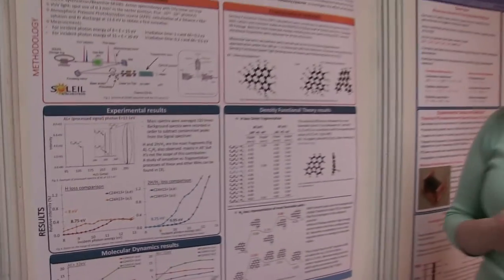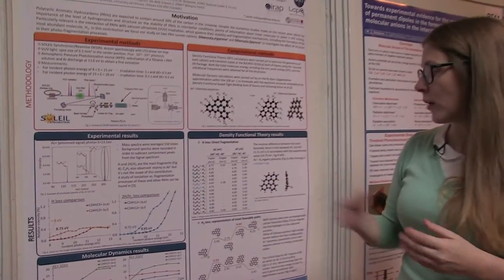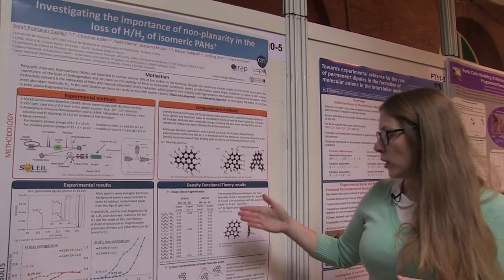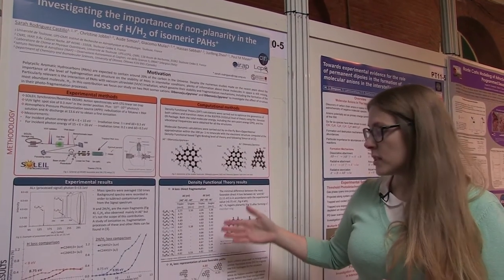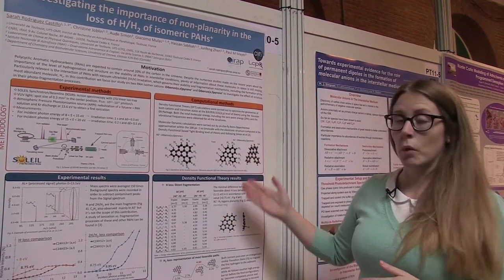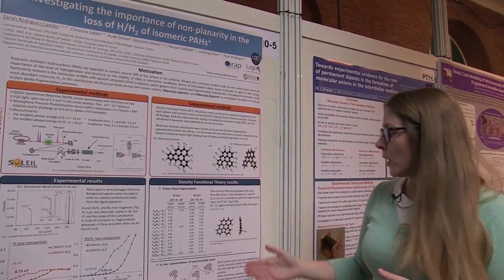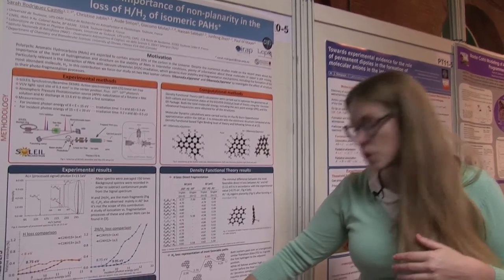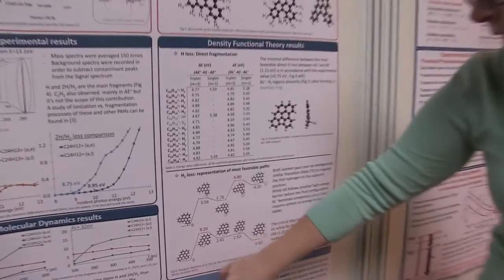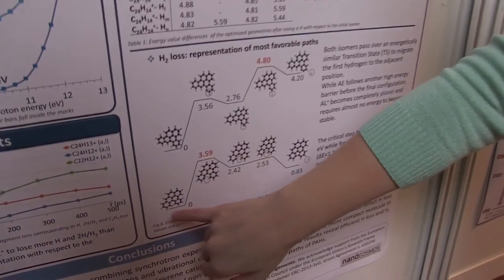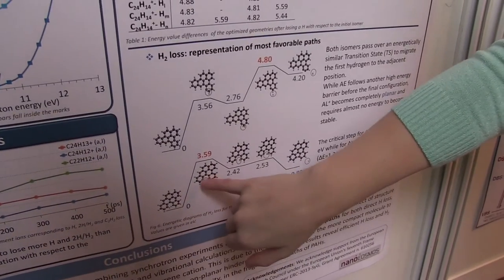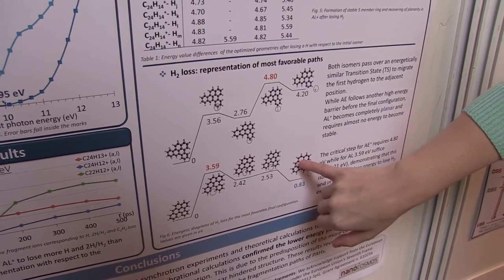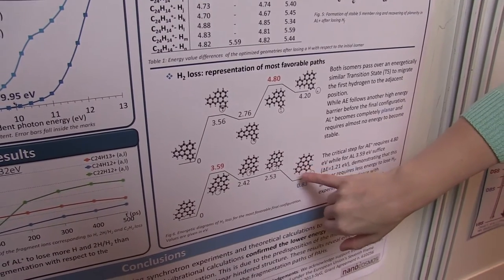We carried out theoretical calculations with density functional theory and confirmed these lower energetics for the nonplanar molecule. We found a favorable H2 loss path in which the nonplanar molecule loses these two hydrogens, then becomes planar and forms a stable 5-membered ring.